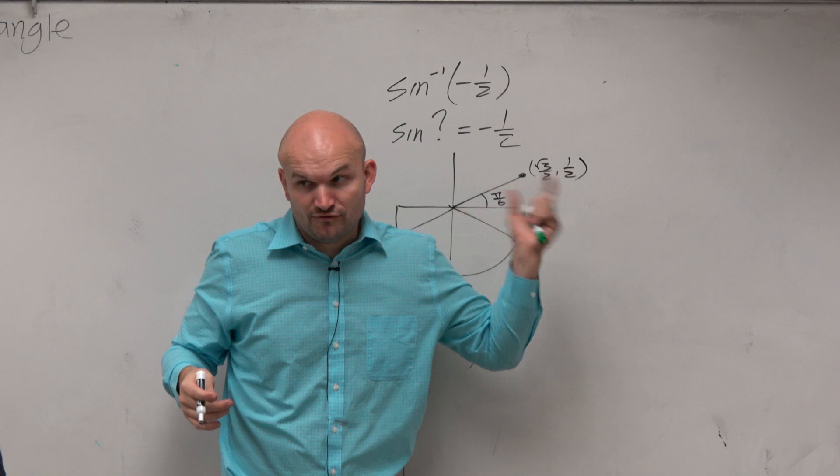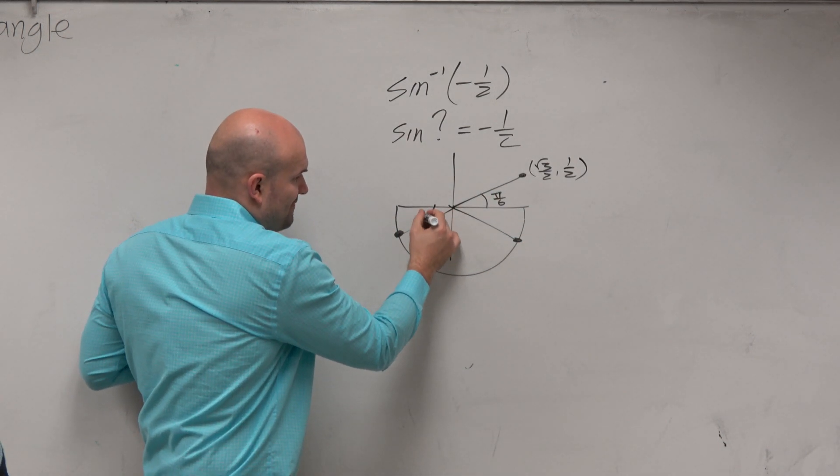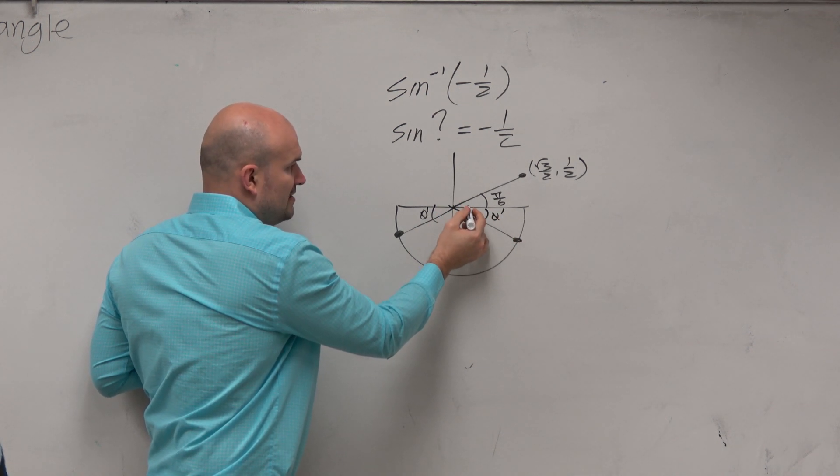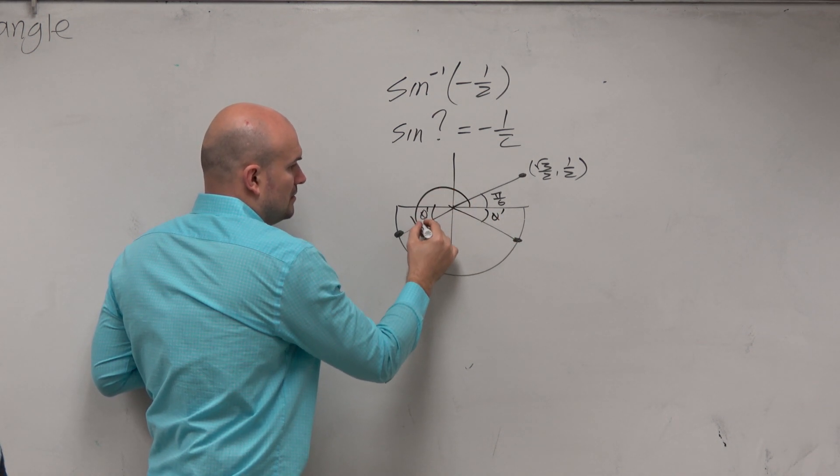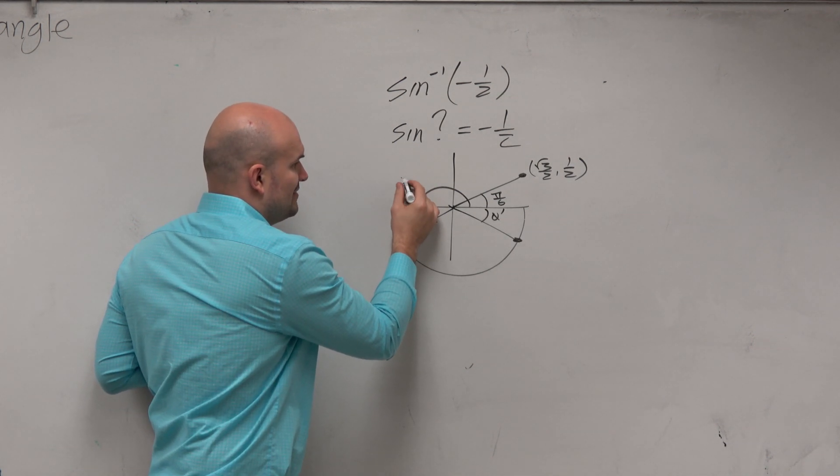So since I know that first quadrant very well, then I know if these have the same reference angle as that, then these two angles must be—what is this one? It would be 7π/6. Right, 7π/6.